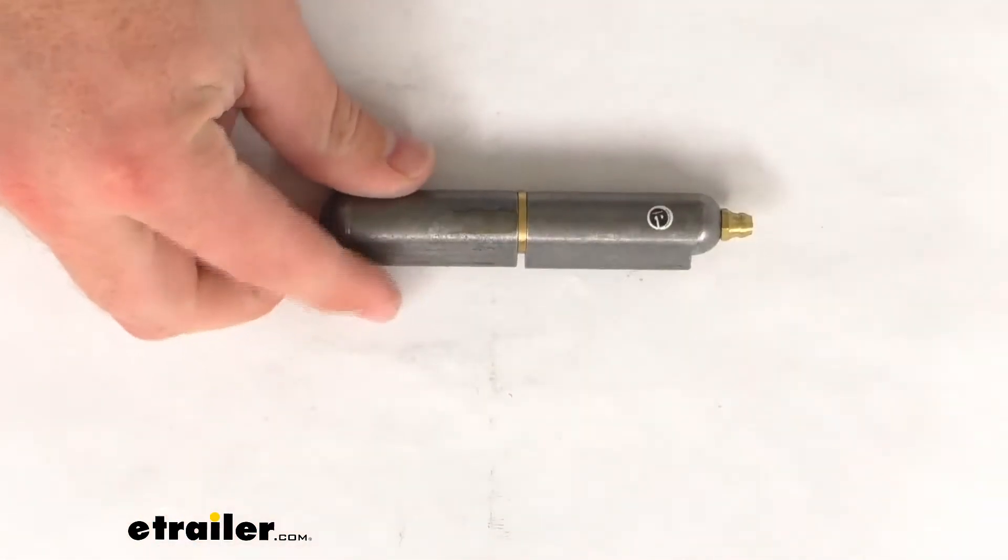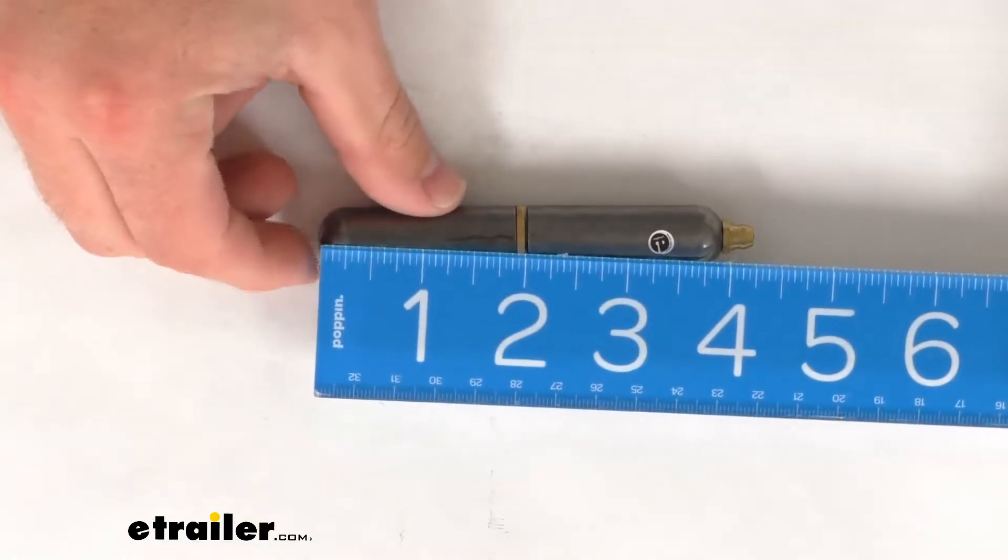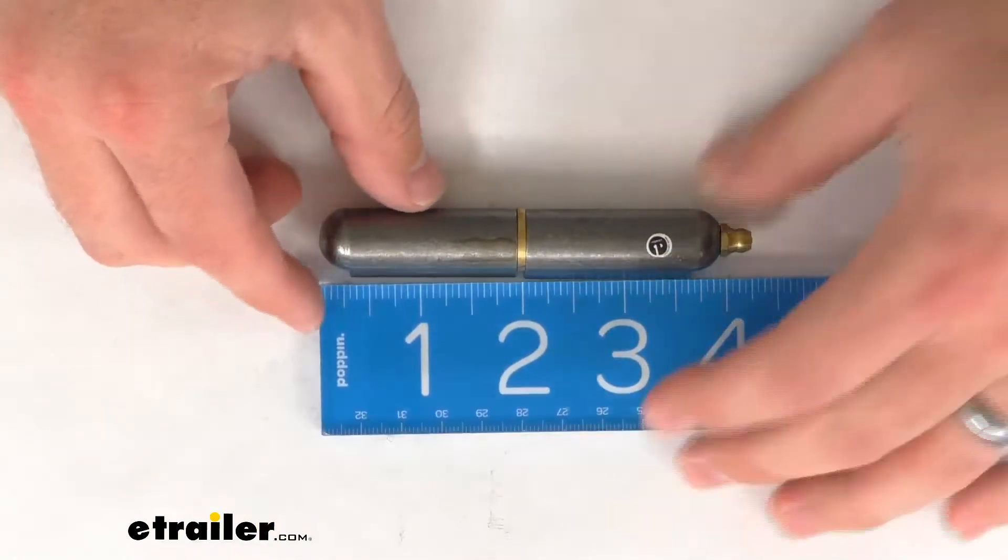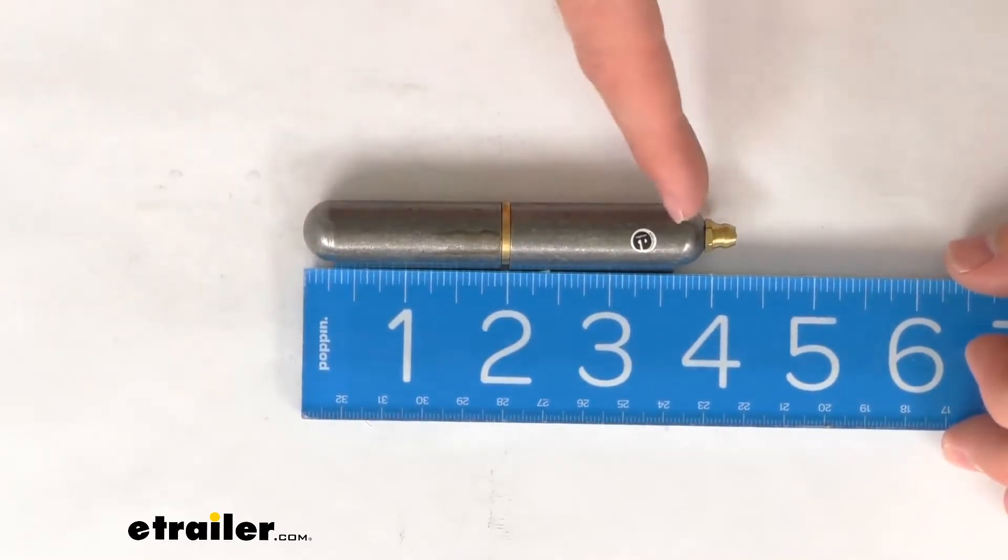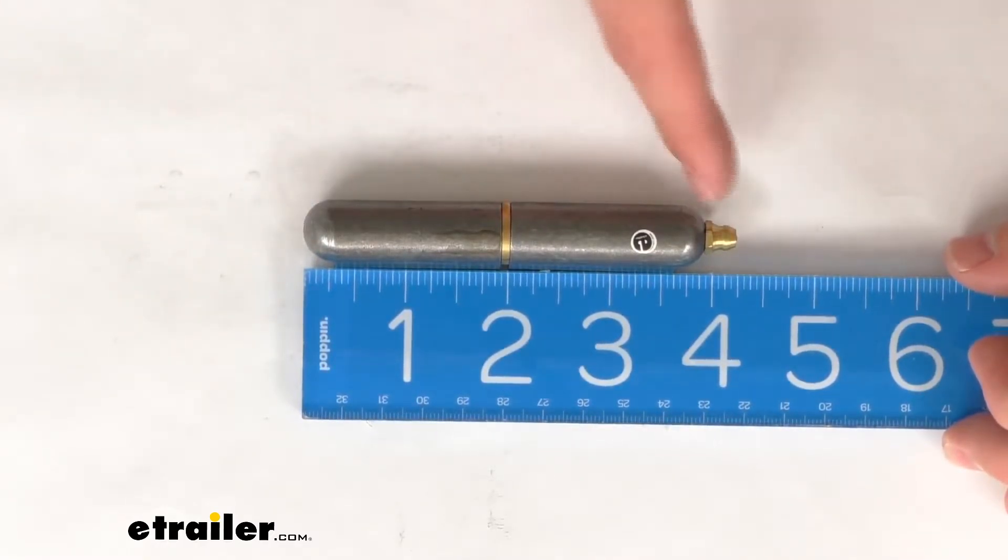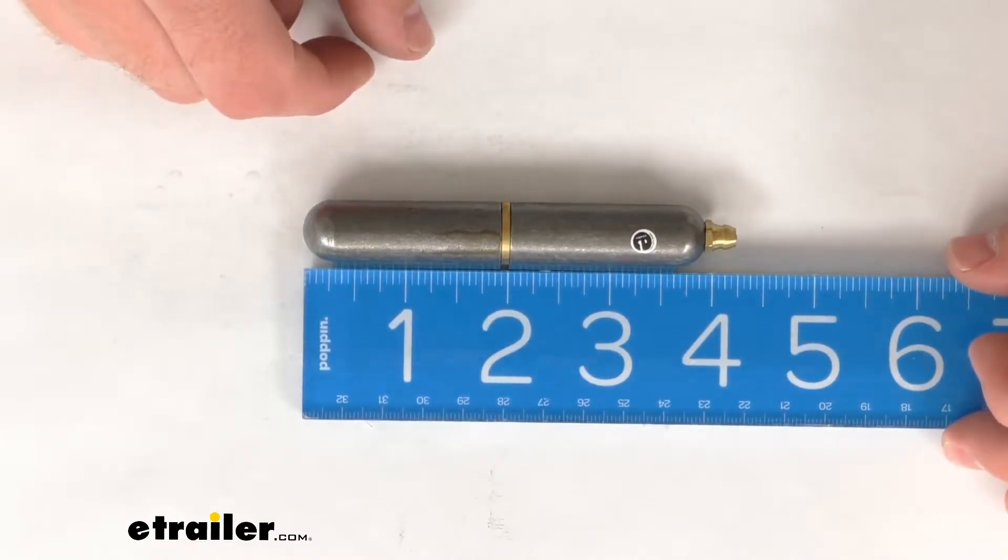This is going to be a three and five sixteenth inch long hinge and when we measure just the body here, if we take into account the grease zerk, it's about four and a quarter of an inch overall length.